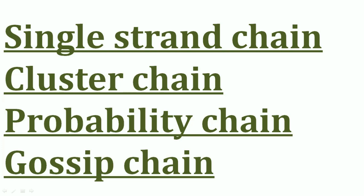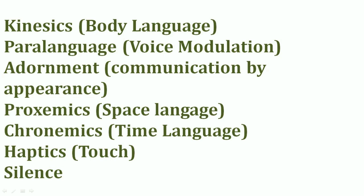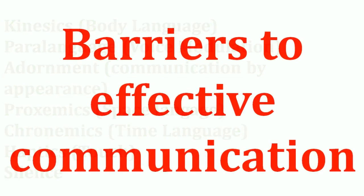The next question is various forms of nonverbal communication. The forms are: kinesics, paralanguage, adornment, proxemics, chronemics, haptics, and silence. Any of these headings can be asked for two marks — for example, what do you mean by kinesics, proxemics, or silence? This is a very important question, so revise it from your book.